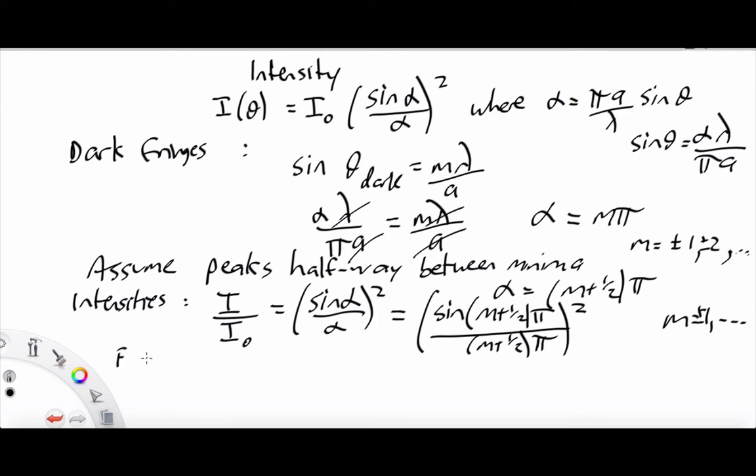The first secondary maximum is going to be where M equals 1. And that lets us find that intensity of that first maximum, I1 over I naught is sin of 1 and a half pi. So M is 1. So M plus a half there over 1 and a half times pi squared.